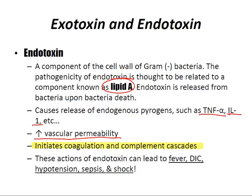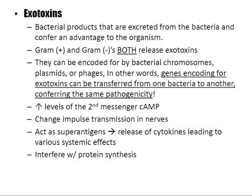The initiation of coagulation and complement cascades by endotoxin is why you can get DIC — disseminated intravascular coagulation — as well as hypotension, sepsis, and shock. Exotoxins are bacterial products excreted from the bacteria that confer an advantage to the organism. Genes encoding exotoxins can be transferred from one bacterium to another via bacterial chromosomes, plasmids, or phages, conferring the same pathogenicity.